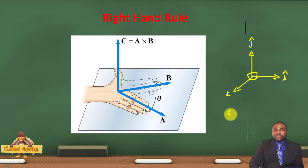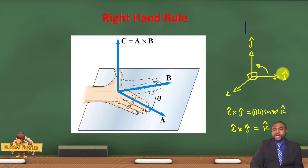So i cross j will be equal to 1, 1 sine 90 degrees multiplied by a unit vector perpendicular to i and j, which is k. So if you look at this, there is a rule of thumb: i cross j gives k, j cross k gives i, and k cross i gives j.